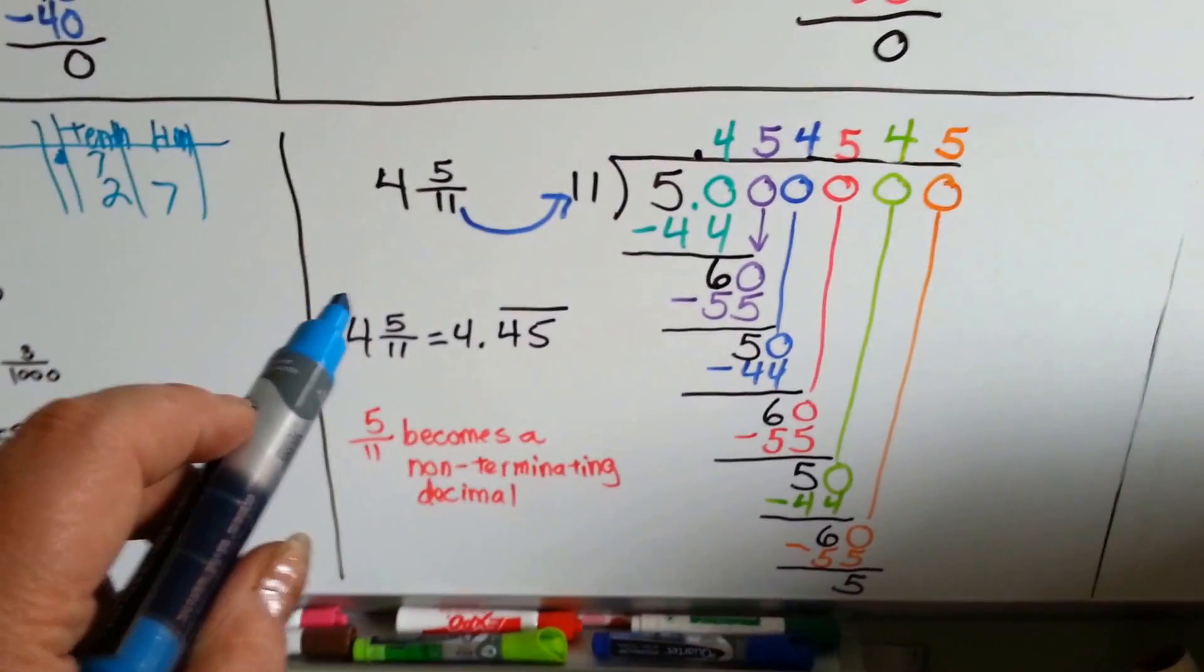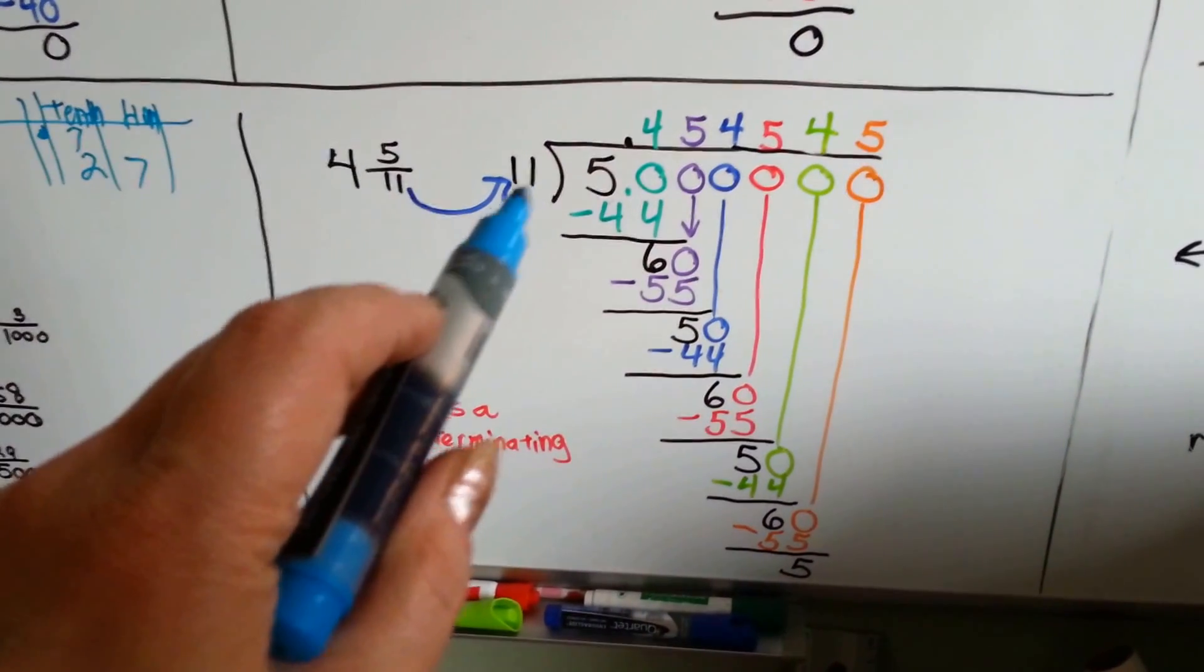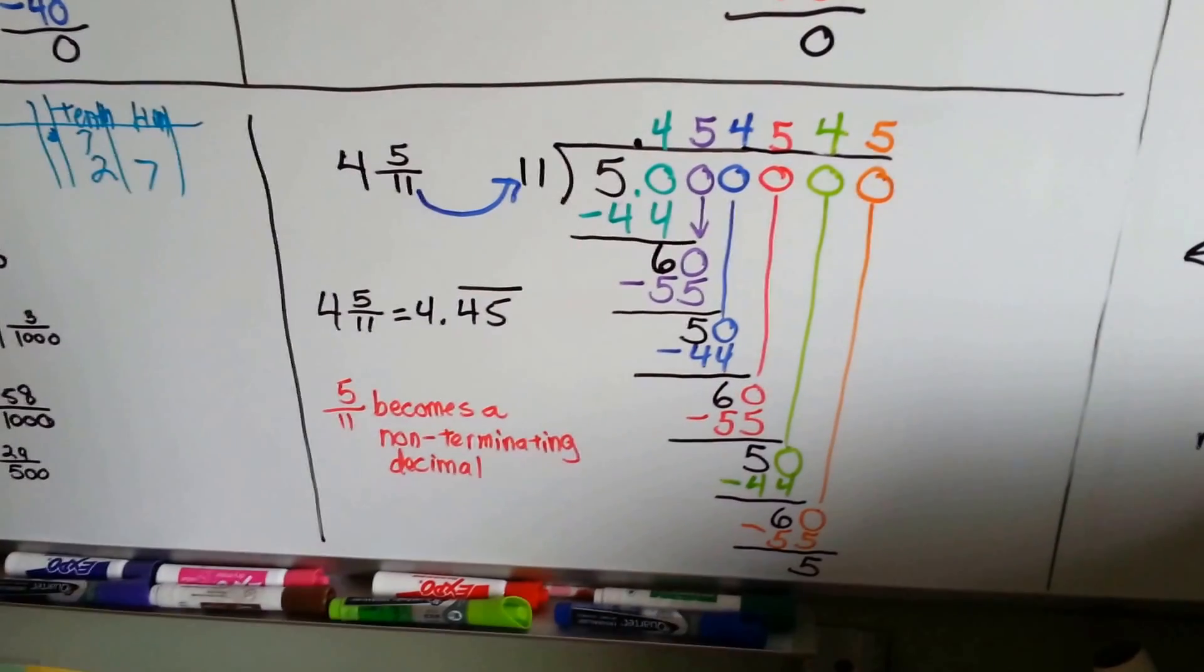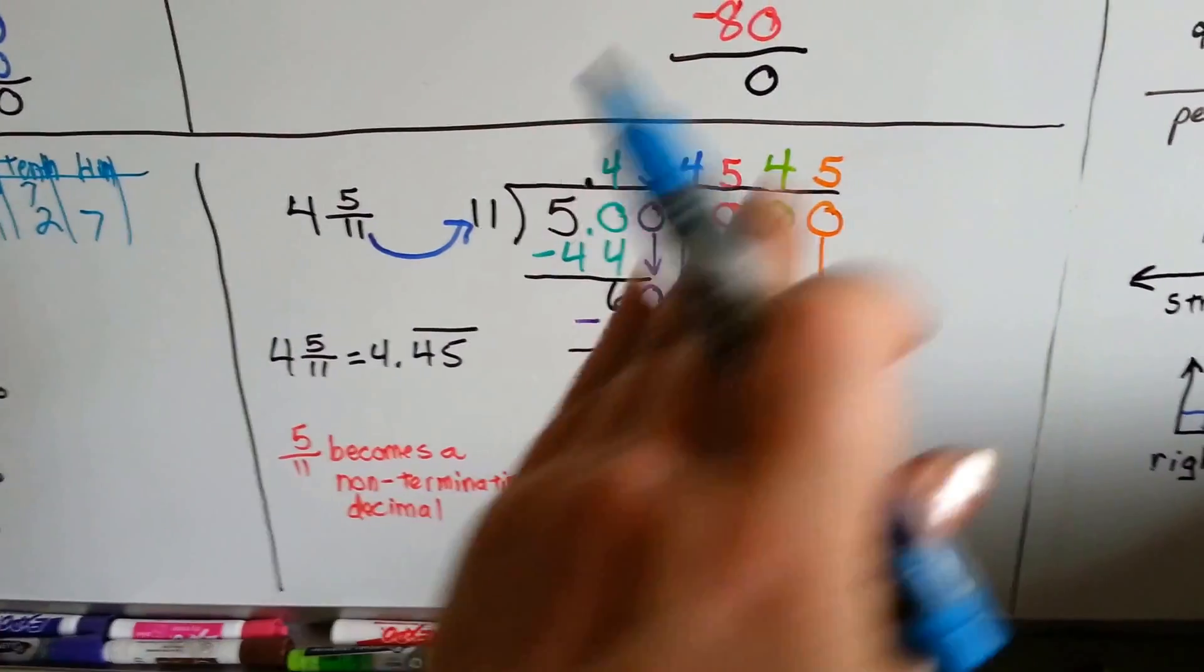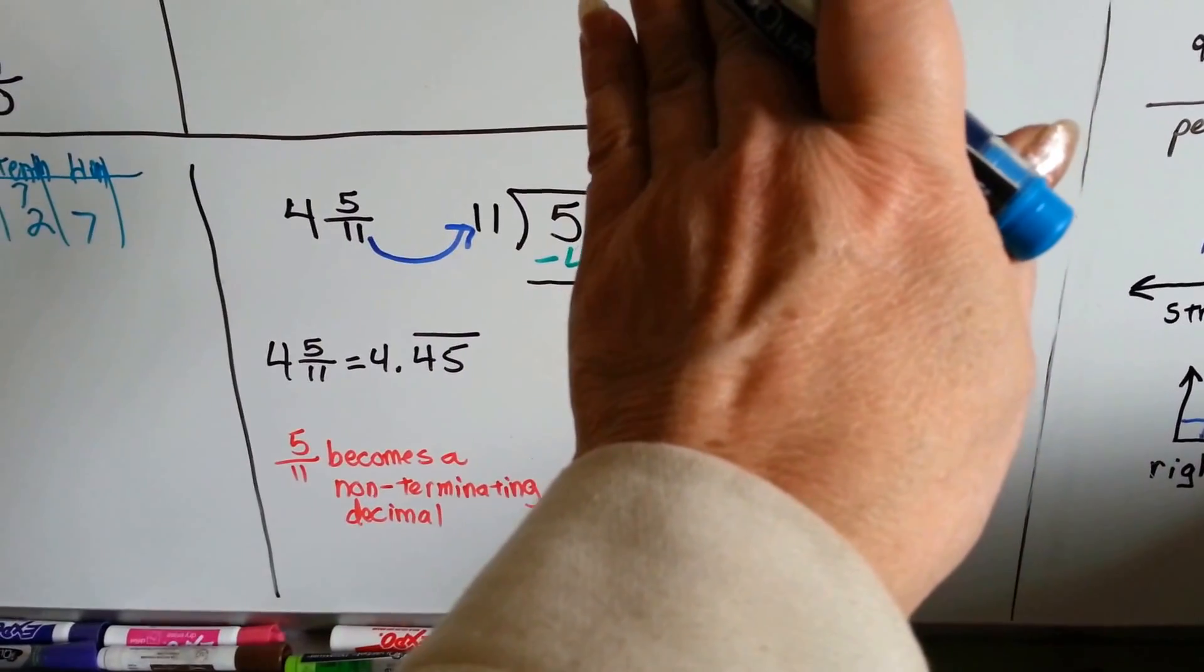If we had 4 and 5/11, the 11 becomes the divisor. The 5 is the dividend. We put the 4 off to the side. And we ask, how many times can 11 fit into 5? None.